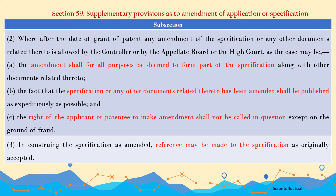Section 59, Subsection 2: Where after the date of grant of patent any amendment of the specification or related document is allowed by the Controller, or by the Appellate Board, or by the High Court, then the amendment shall for all purposes be deemed to form part of the specification — that is, the amended portion will now be part of the specification. The fact that the specification or any document has been amended will be published as expeditiously as possible. And the right of the applicant or patentee to make amendment shall not be called in question except in case of fraud.